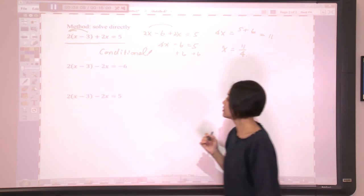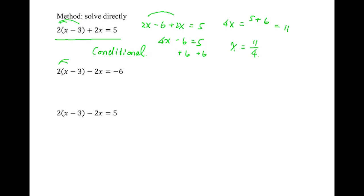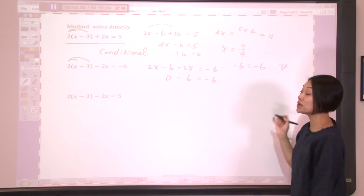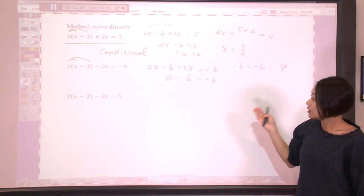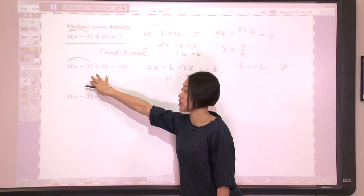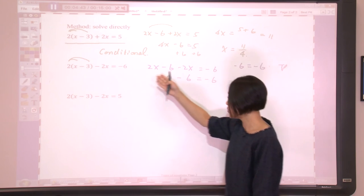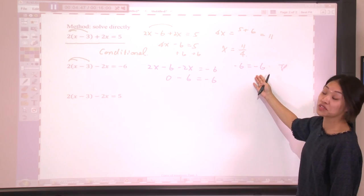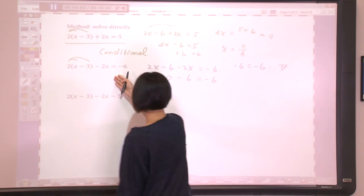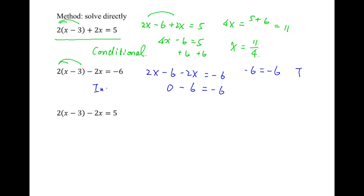Let's try the next one. Let's distribute first. So we will have 2x minus 6 minus 2x equals negative 6. Again, let's combine the like terms: 2x minus 2x is 0, so we get negative 6 equals negative 6. This is always true. So because this is always true, it implies the original equation is an identity, because no matter which value you plug in for x, you will always get negative 6 equals negative 6. So the conclusion is this equation is an identity.